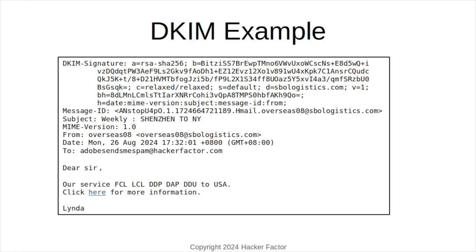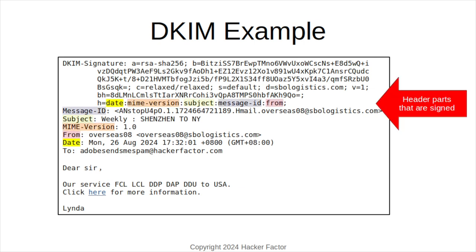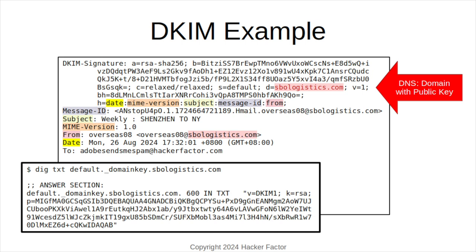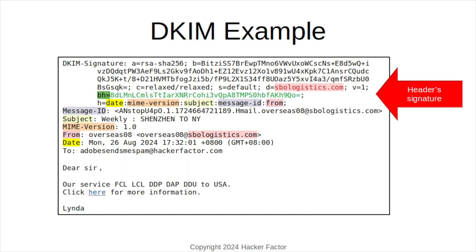DKIM is so ubiquitous that your mail server is probably doing it right now, and you don't even realize it. Here's an example email with a raw header showing a DKIM signature at the top. It identifies the signed header fields and the domain name containing the public key. This needs to match the sender. If I look up the DNS entry, I can see the public key.